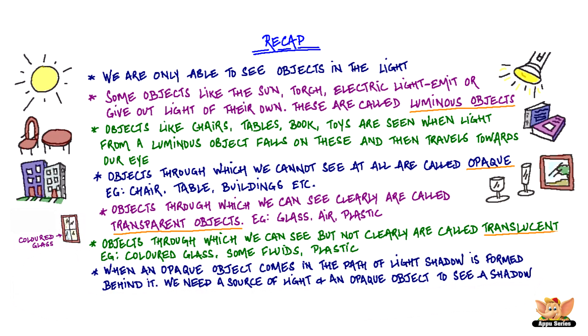When an opaque object comes in the path of light, a shadow is formed behind it. We need a source of light and an opaque object to see a shadow.